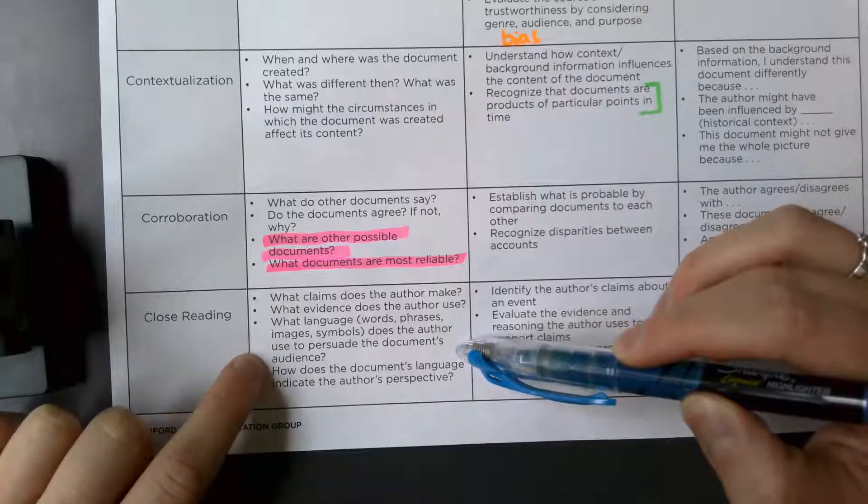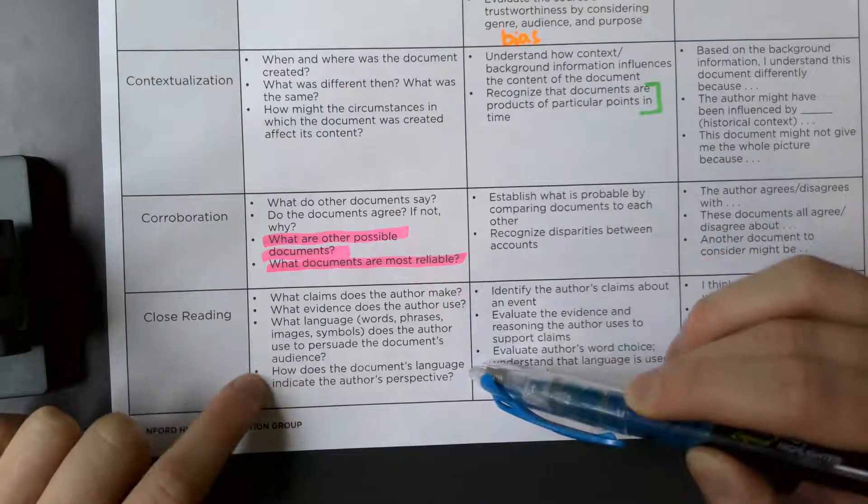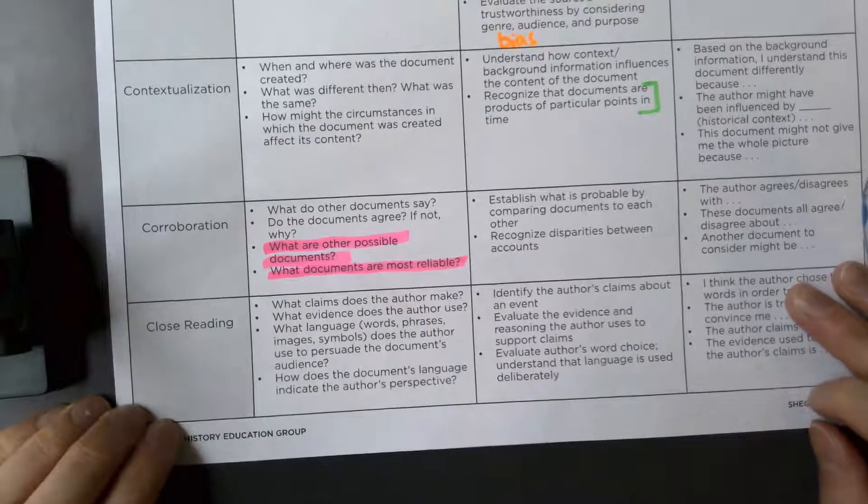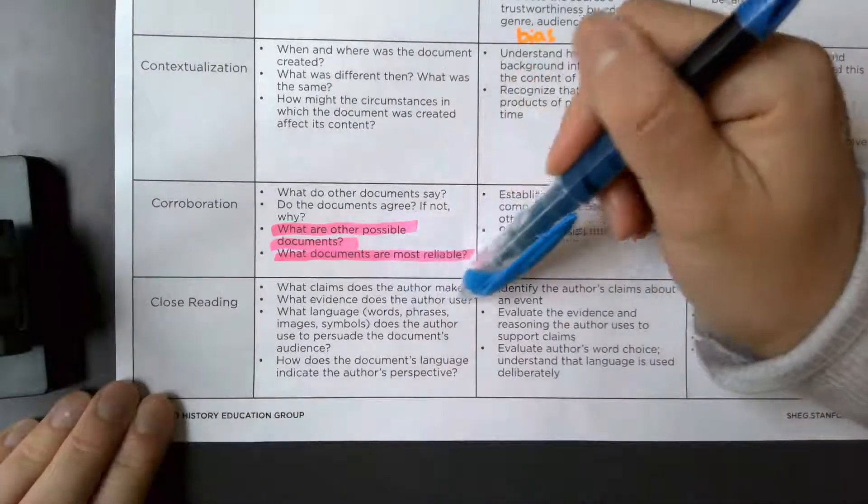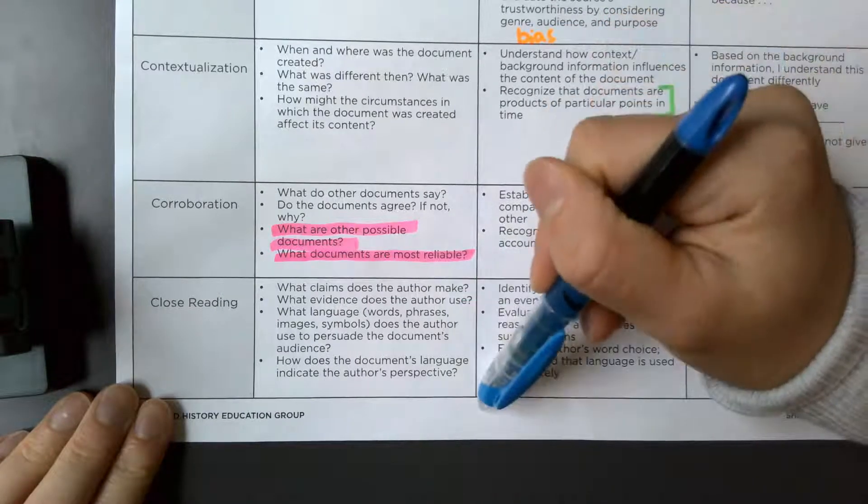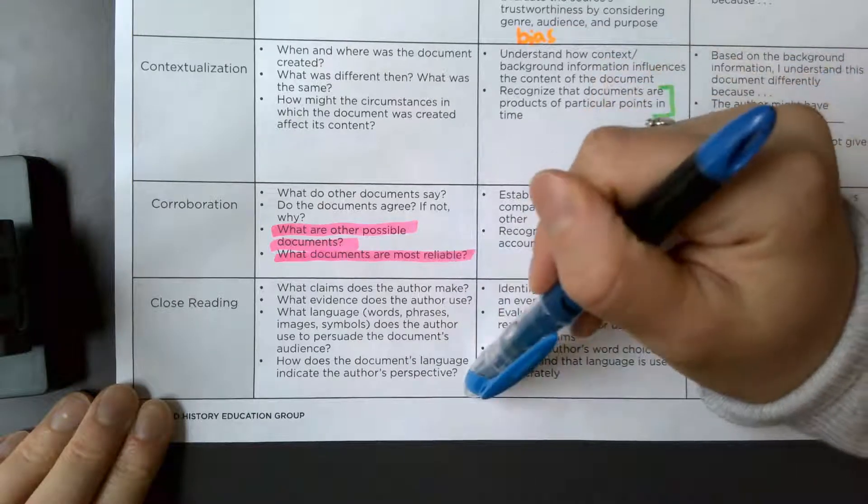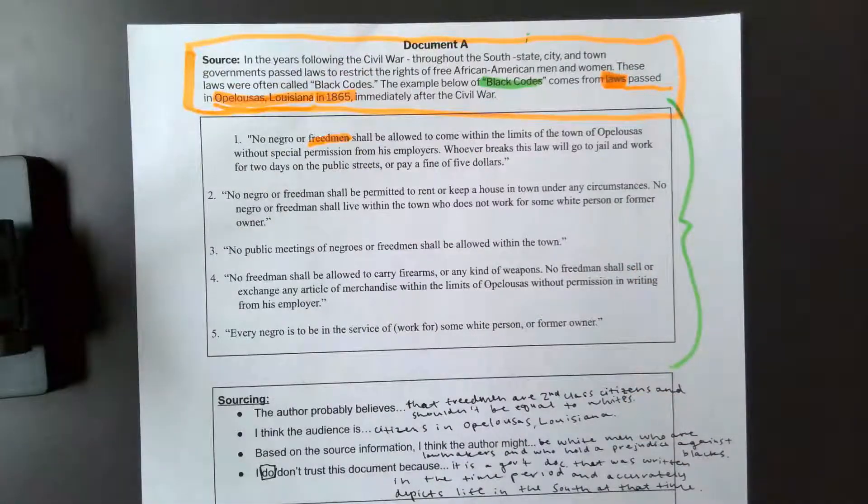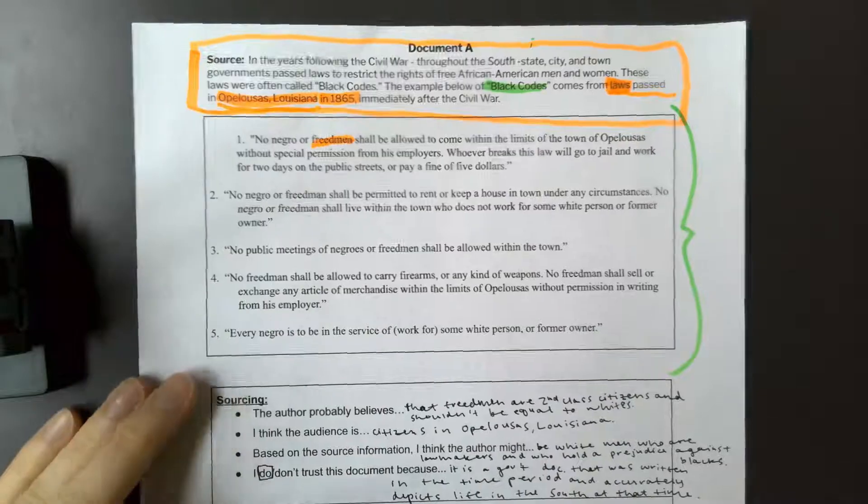And how does the documents language indicate the author's perspective? So we're trying to figure out basically what exactly is the author saying, where's the evidence, and how is their language implying what they think about the topic. Okay, so for this one we'll be going back to our trusty old document A, which is our black codes document once again.